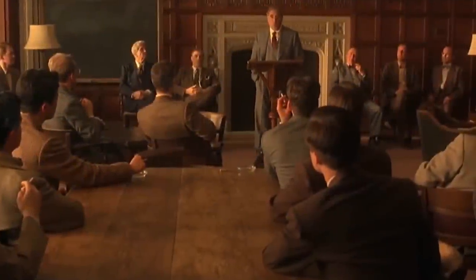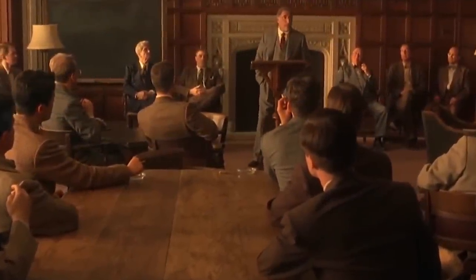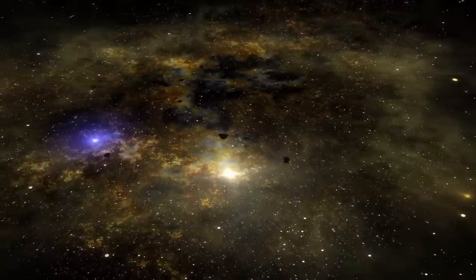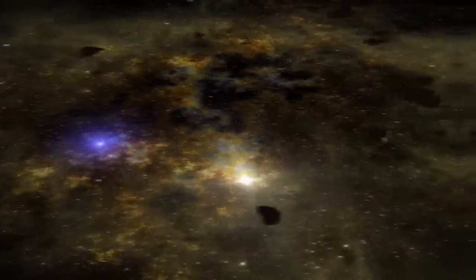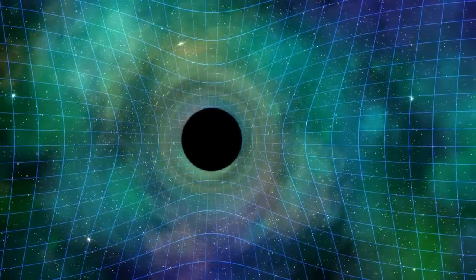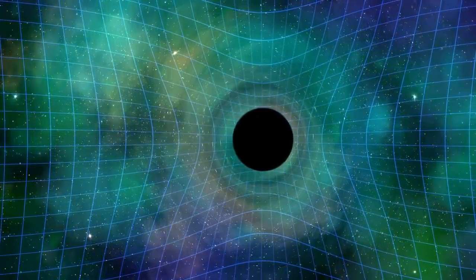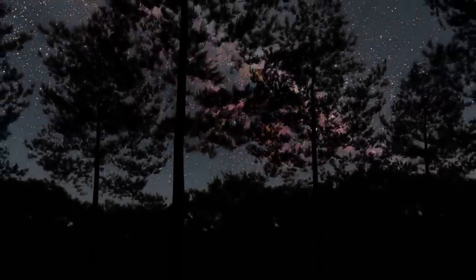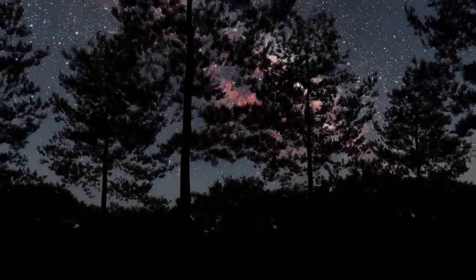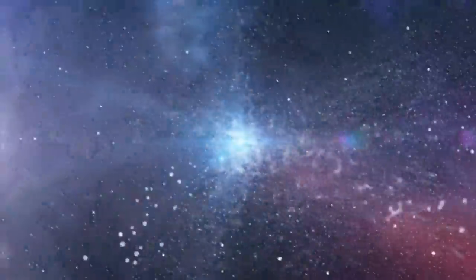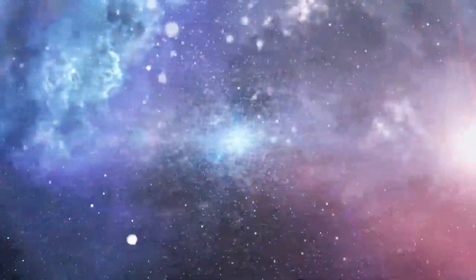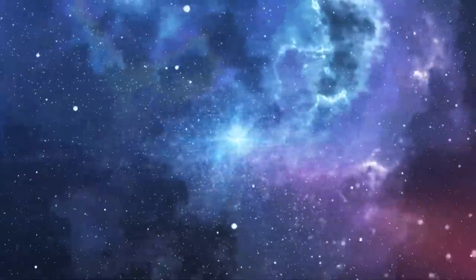In 1960, Martin David Kruskal, a mathematician, expanded on the ideas put forth by Schwarzschild regarding black holes. He introduced a new concept called singularity, although he didn't fully grasp its significance at the time. Little did he know that his work would become incredibly important as black holes gained greater recognition. You see, black holes are fascinating objects described by a theory called general relativity. However, this theory also allows for the existence of theoretical entities known as white holes.